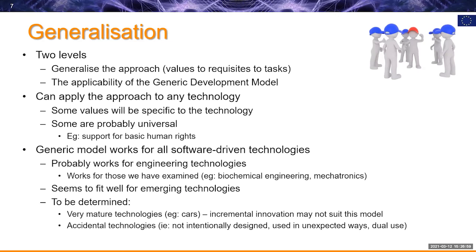There may be other models that are more or less applicable. When it comes to generalizing this process, there are two elements. One is the process of going from values through to requisites to tasks — you can draw the values from existing sources. Other initiatives working in this, such as the P7000 initiative from IEEE, actually talk about mechanisms by which you would develop your values. The second issue is the application of either our generic development model or an alternative. Once you've got your two structures — your values, requisites, and tasks, and a development model — you're in a position to start applying specific requirements to a specific technology.